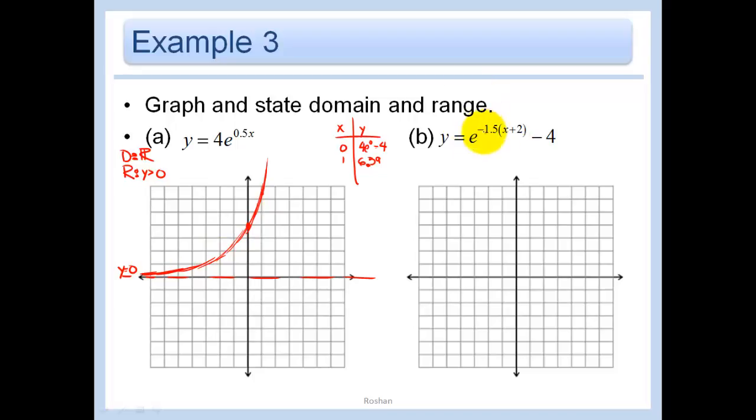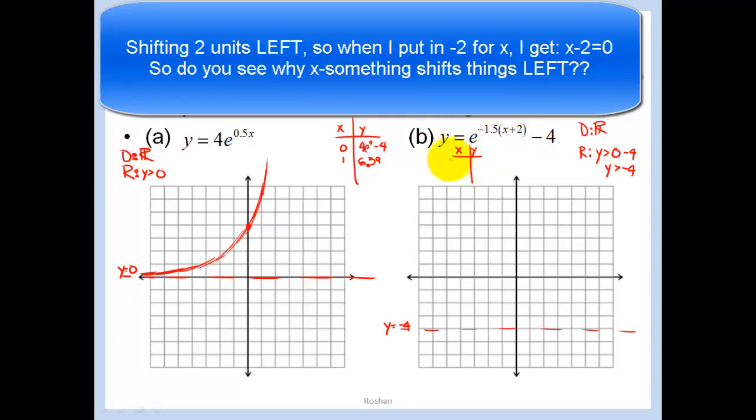In this example here, you'll notice the negative, which means we are dealing with decay. We are also shifting this guy 2 units left and 4 units down. Because we're shifting it 4 units down, I can immediately say the range is now y > -4. So let's put that asymptote in. And our domain does not change, all real numbers. For the points I want to choose here, since I'm shifting 2 units to the left, I'm going to use x = -2, because when I put -2 there I get e^0, which is 1. 1 - 4 = -3. That's the point (-2,-3). That's what makes that 0.